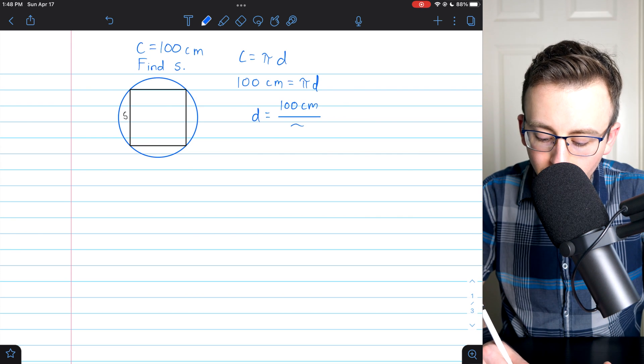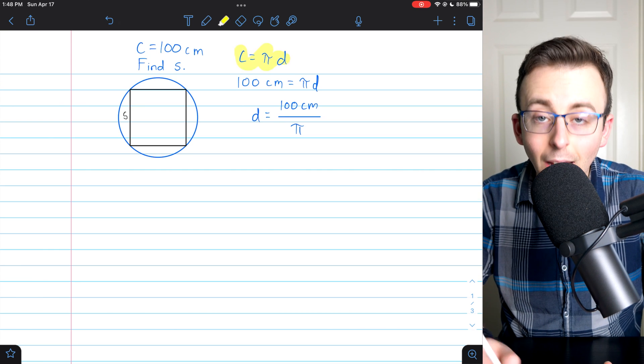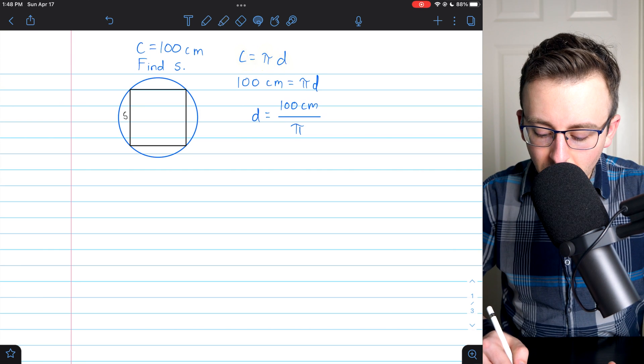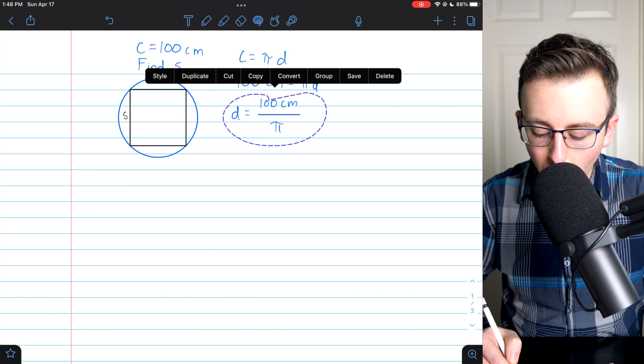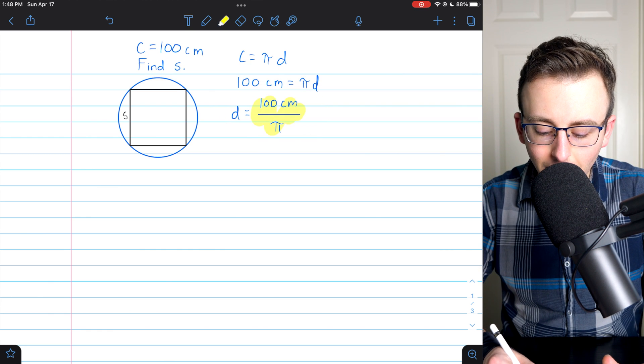Again, this all comes from the fact that the circumference of a circle is pi times diameter. Using that equation and solving for d lets us know what the diameter of the circle is.